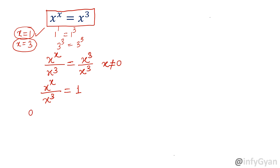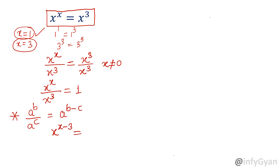Now, the property of exponents says: if a power b over a power c — same base, different exponent — then it equals a raised to the power b minus c. By this property, the equation converts into x raised to the power x minus 3, equal to 1.